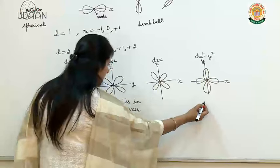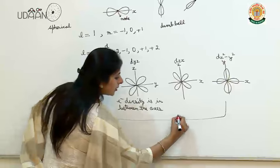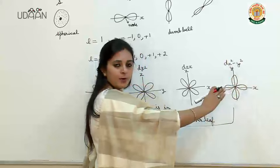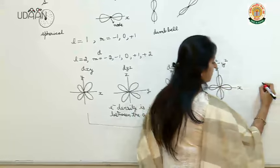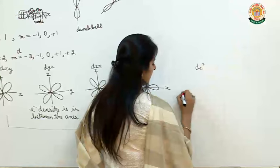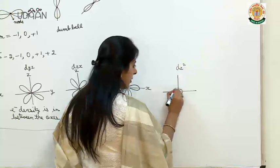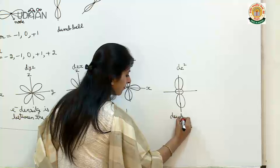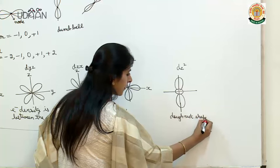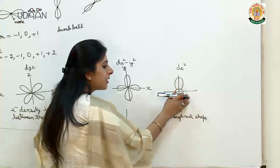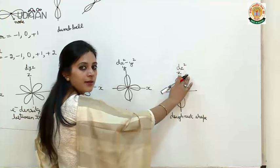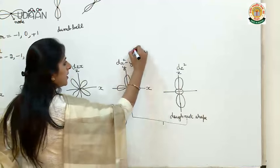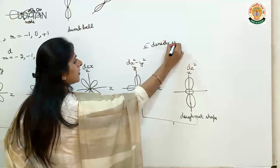In these three orbitals — dxy, dyz, dzx — electron density is in between the axes. For dx²−y², the electron density is along the axes, not between them. The key difference between dzx and dx²−y² is that in dzx, electron density is between the axes, but in dx²−y², it is along the axes. These four shapes are known as clover leaf shape. The dz² orbital has a dumbbell shape with electron density maximum along the z-axis. In both dz² and dx²−y², electron density is along the axis.